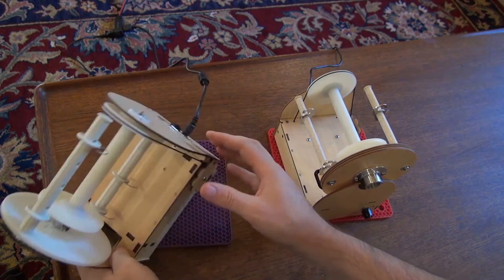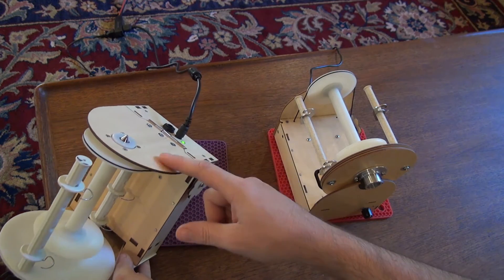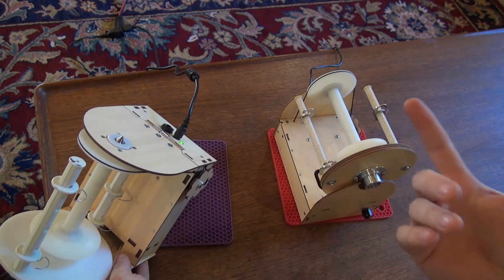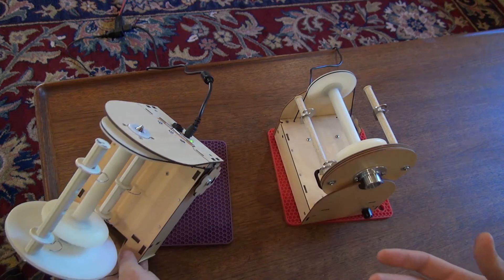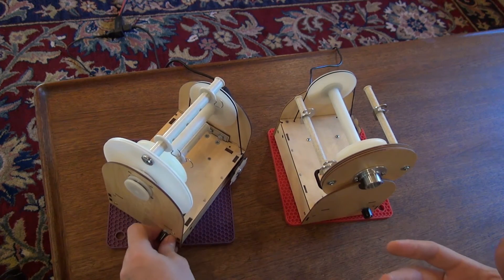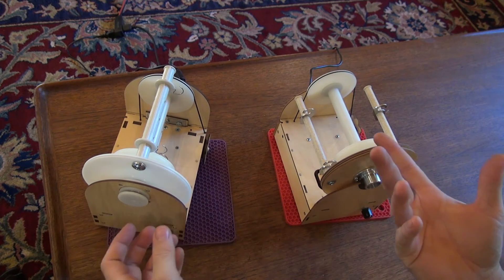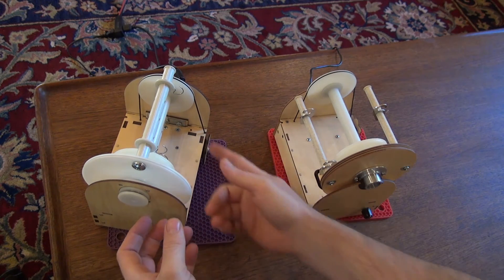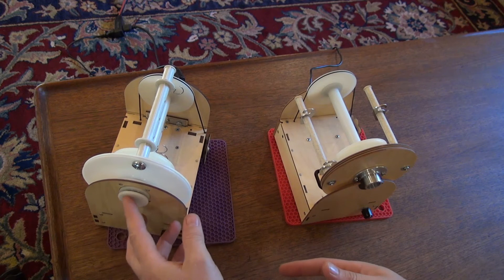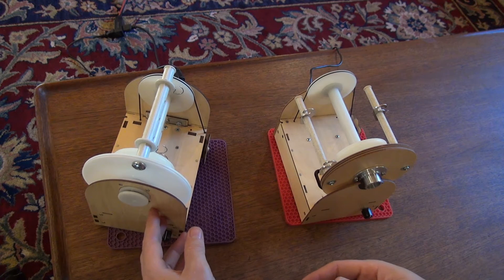And the reason I did this hinge design was primarily so I could get the bearings in, but it's also really nice, turns out, when you're changing the bobbins. So that's a really cool design. I've never seen that before on a spinning wheel. It may exist, but I thought it was a really good solution as a way to get the bearings into the system.